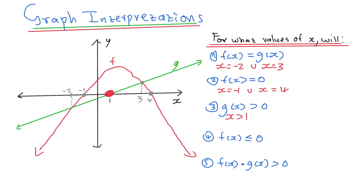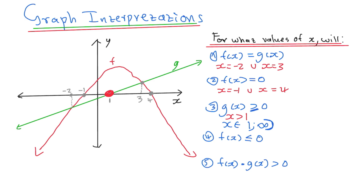Others prefer using interval notation: x is an element of, from 1 to positive infinity. Infinity always takes a curve bracket. If there was an equal sign under the greater-than sign, we would include 1 and use a square bracket. But because there's no equal sign, we use a curve bracket — 1 is not included. So you can present it either as x > 1 or as x ∈ (1, +∞).